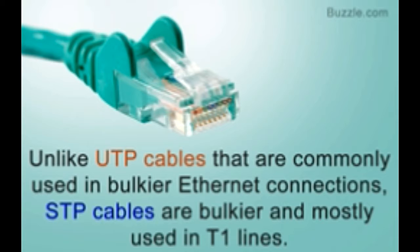However, the wiring mechanism — the protocol that dictates how many pins of the plug will be used, which wires will carry data in which direction, and other similar specifications — is different in the two. While UTP cables employ RJ45 wiring, STP cables generally employ RJ48 wiring, although it is possible to wire them according to RJ45 standards as well.